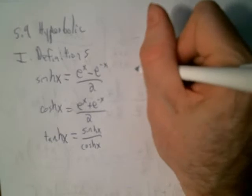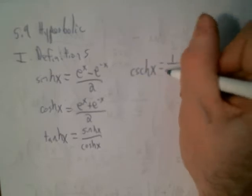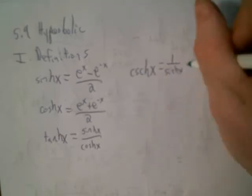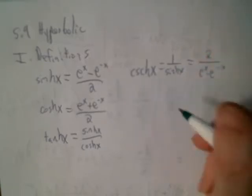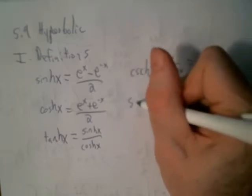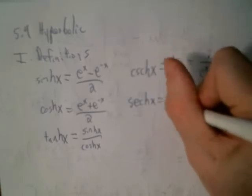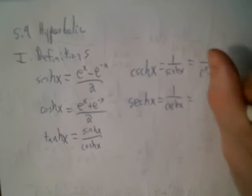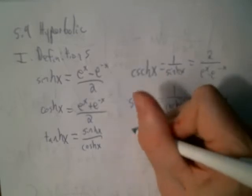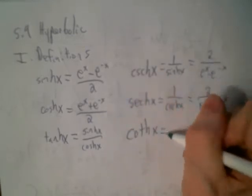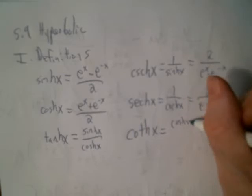We also have all the corresponding reciprocal functions. Hyperbolic cosecant is just the reciprocal of sinh, which is 2 over (e^x minus e^(-x)). Then we have hyperbolic secant, which is 1 over cosh. And hyperbolic cotangent, or coth, which is 1 over hyperbolic tangent — so cosh over sinh.